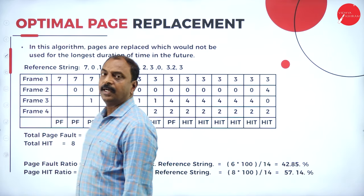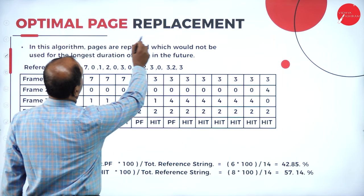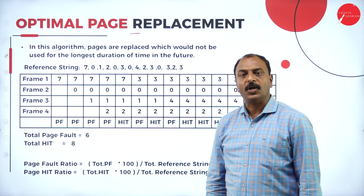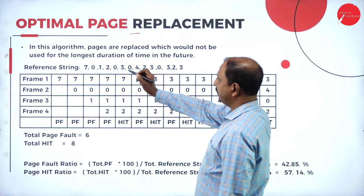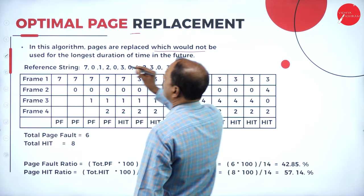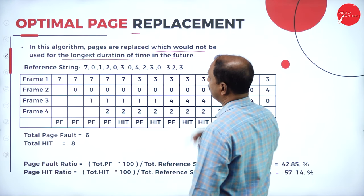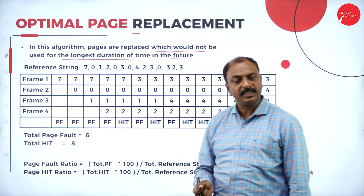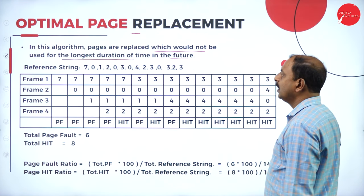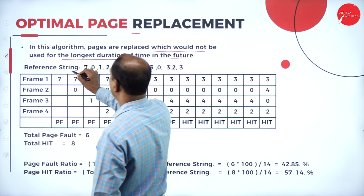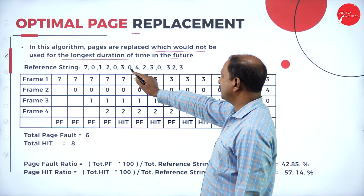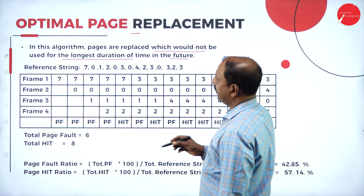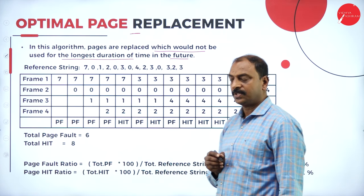Now we will see another method of page replacement: Optimal Page Replacement. In this algorithm, pages are replaced which would not be used for a long duration of time in the future. The given reference string is 7, 0, 1, 2, 0, 3, 0, 4, 2, 3, 0, 3, 2, 3, and there are four frames.